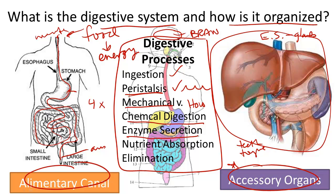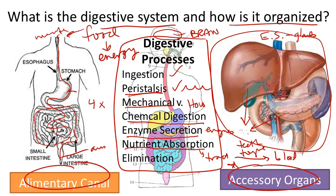Secretion, or enzyme secretion, is another important process. It involves the release of enzymes into the digestive tract from various organs to help break down food into smaller pieces. Nutrient absorption is the movement of food molecules from the digestive tract into the blood. Finally, elimination or defecation is the process of eliminating waste from the system.